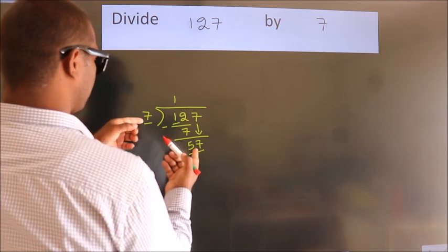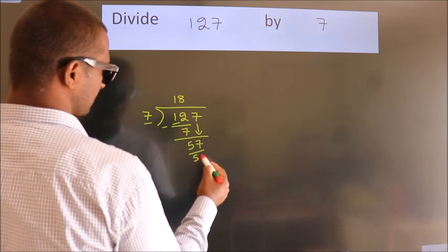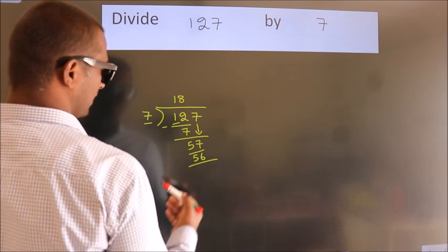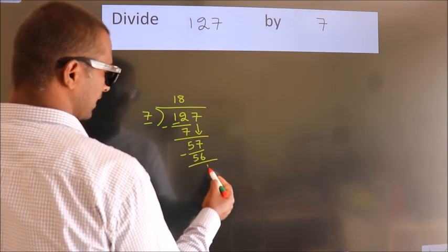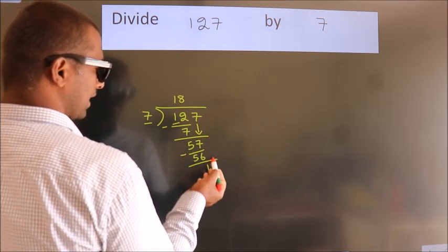7 times 8 equals 56. Now we subtract. We get 1. After this, no more numbers to bring down.